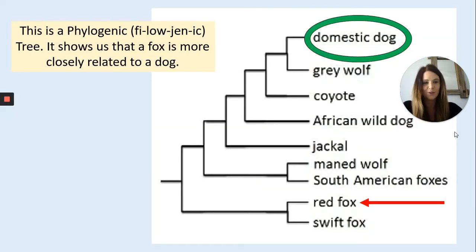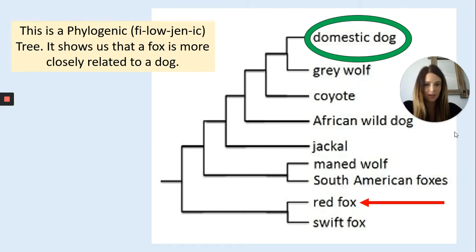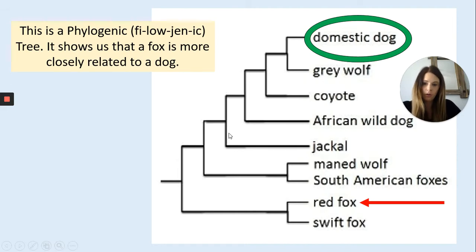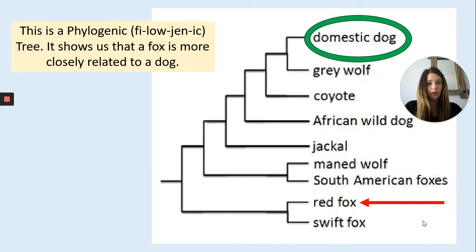The actual answer is it's more closely related to a dog. We can see that from this phylogenic tree. They are quite distantly related — you can see there are many branches on this tree between the fox and the dog. But they do at some point have a common ancestor back here, so they are related but they've evolved over time.